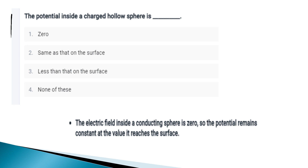Now we will discuss the important questions. First question: the potential inside a charged hollow sphere is — options are zero, same as that on the surface, less than that on the surface, or none of these. Answer: same as that on the surface. For a conducting sphere, the potential is constant and the electric field inside a conducting sphere is zero.